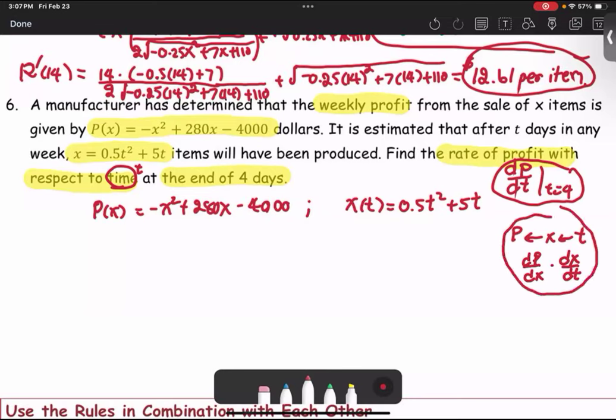So we're going to find dP/dx, which is negative 2X plus 280, and dx/dt, which is 0.5 times 2, or T plus 5.